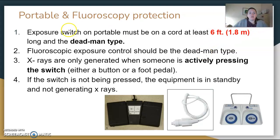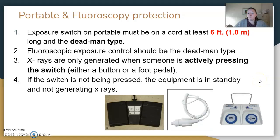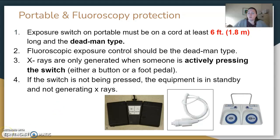For portable and fluoroscopy protection: the exposure switch on a portable must be on a cord that can reach up to 6 feet or 1.8 meters. The fluoro controls and C-arm controls use a dead man type switch — the operator puts their foot on it to expose, but as soon as they let off with no pressure, there is no exposure happening. If no one's touching it, it's on standby. The foot pedal for C-arm and fluoroscopy are all dead man switches.